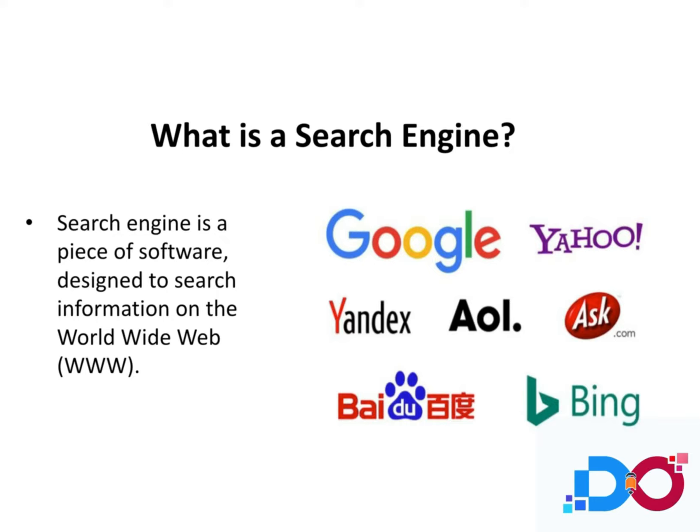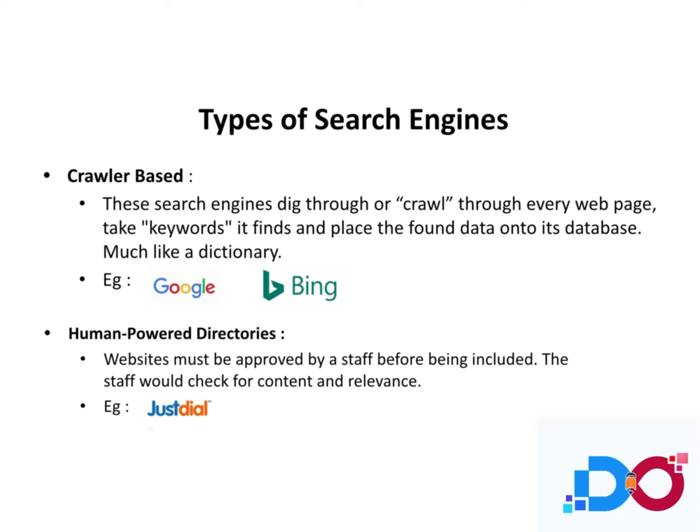This is what a search engine does. A few examples of search engines we are already exposed to are Google, Yahoo, Bing, Baidu, Yandex, AOL, and Ask.com. Some of these are search engines for different geographical locations. Now let's understand what the types of search engines are.